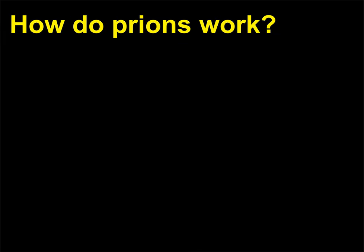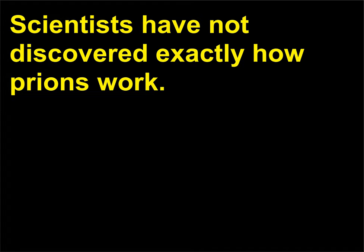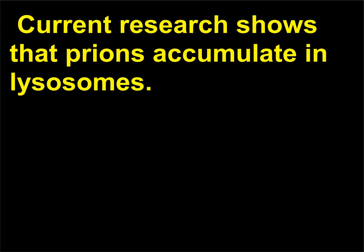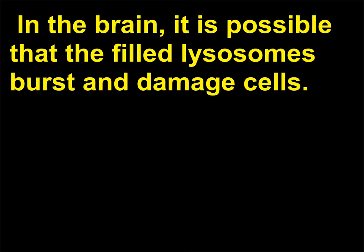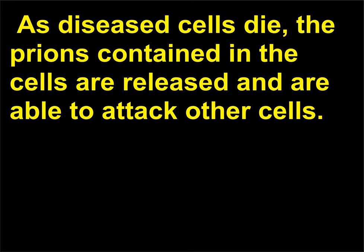How do prions work? Scientists have not discovered exactly how prions work. Current research shows that prions accumulate in lysosomes in the brain. It is possible that the filled lysosomes burst and damage cells. As diseased cells die, the prions contained in the cells are released and are able to attack other cells.